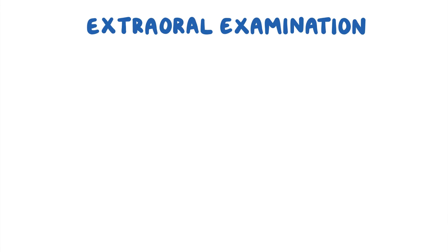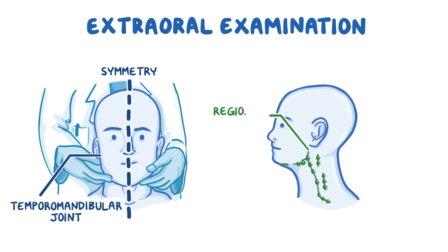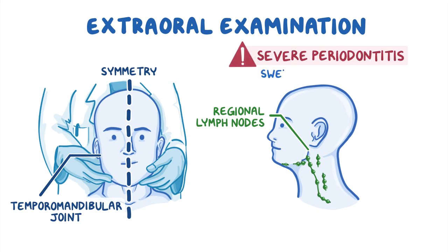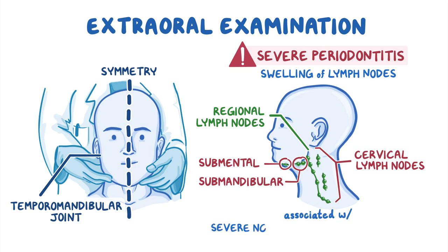Moving on to the extraoral examination, which refers to the examination of the temporomandibular joint, the symmetry of the face, and regional lymph nodes. This is an important part of the diagnosis because in severe cases, periodontitis can cause facial swelling and enlargement of submental, submandibular, and cervical lymph nodes. The enlargement of regional lymph nodes is typically associated with severe necrotizing gingivitis and acute periodontal abscess.